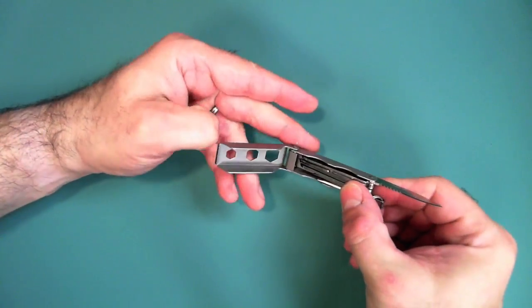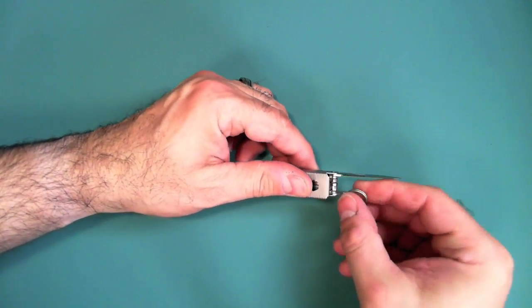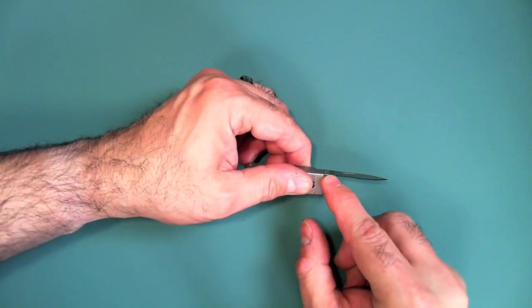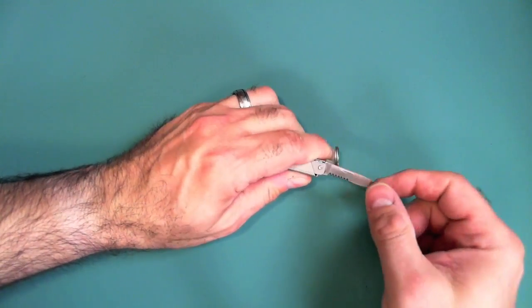But that's not the only way it locks. When you close this cover, this little piece here comes down behind the notch on the blade. And you can see that it actually helps keep it from closing on you.